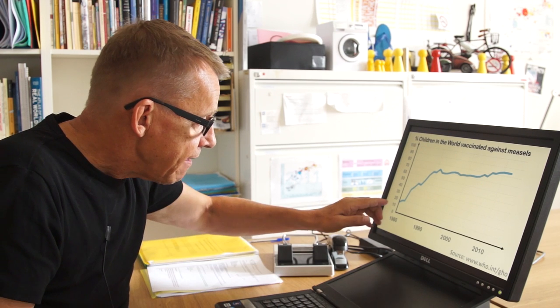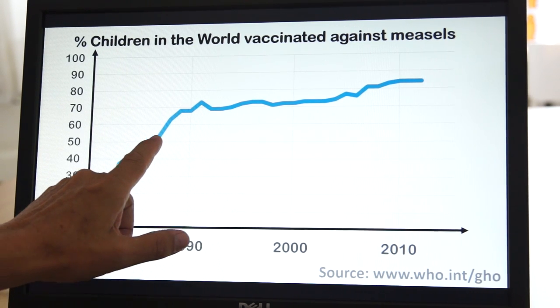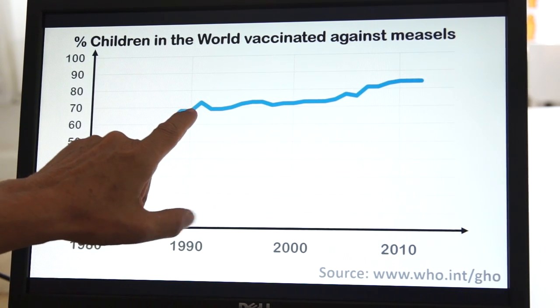But then vaccination came and in only ten years here 70% of the children of the world were vaccinated.